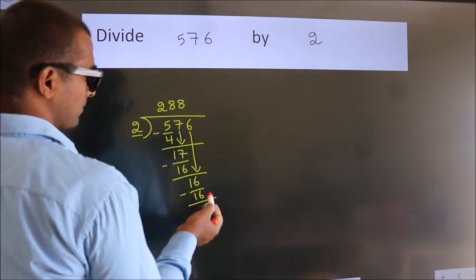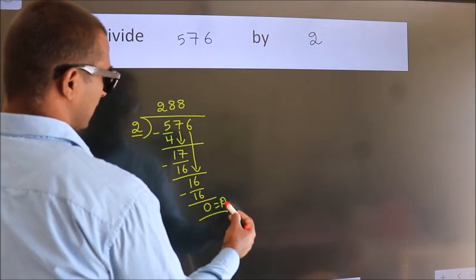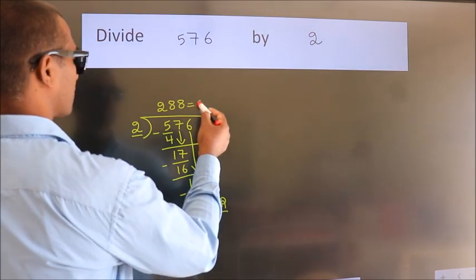No more numbers to bring it down. So, we stop here. This is our remainder. This is our quotient.